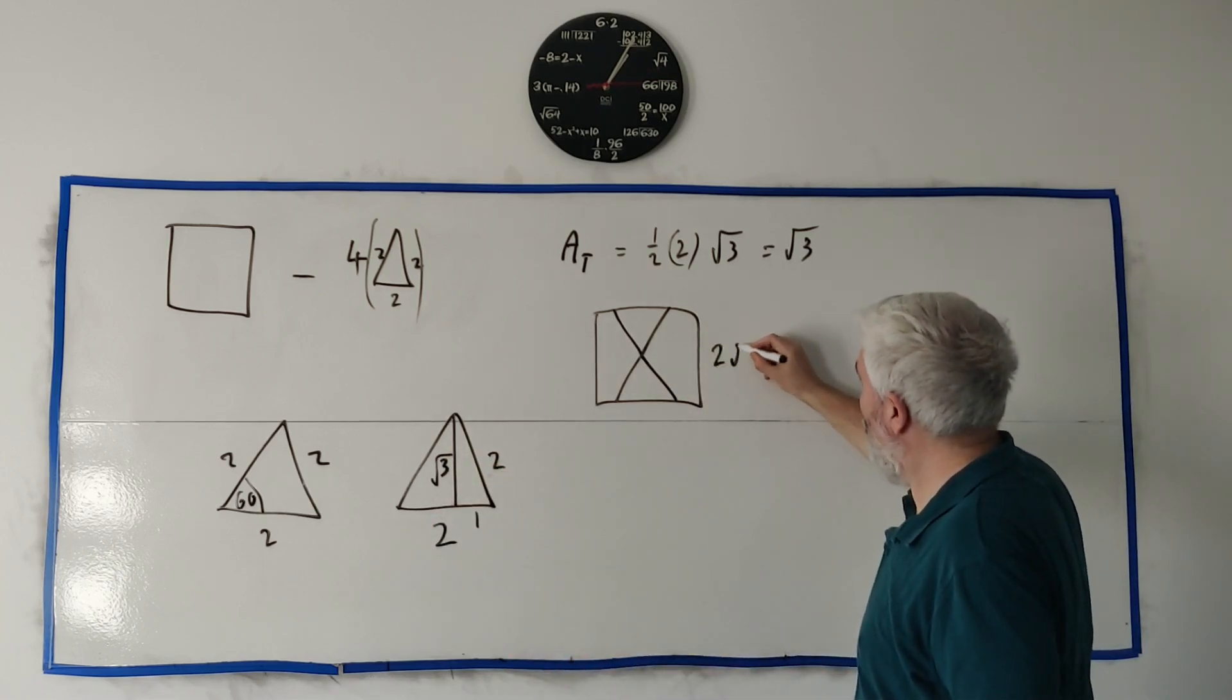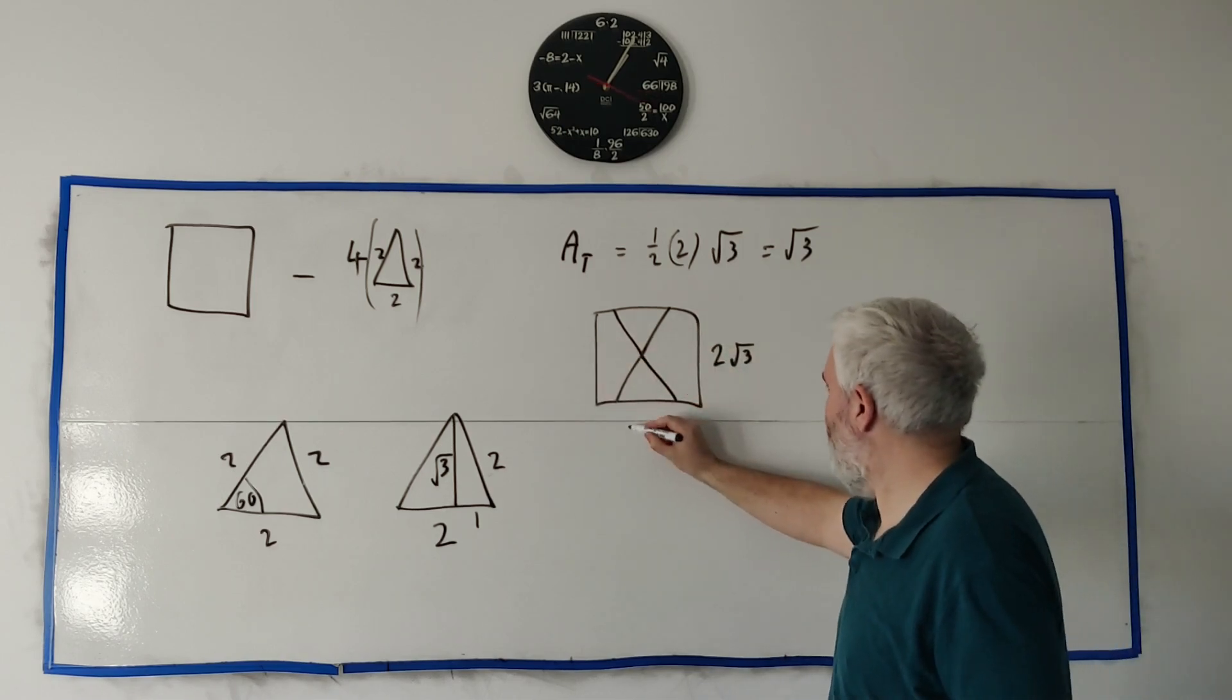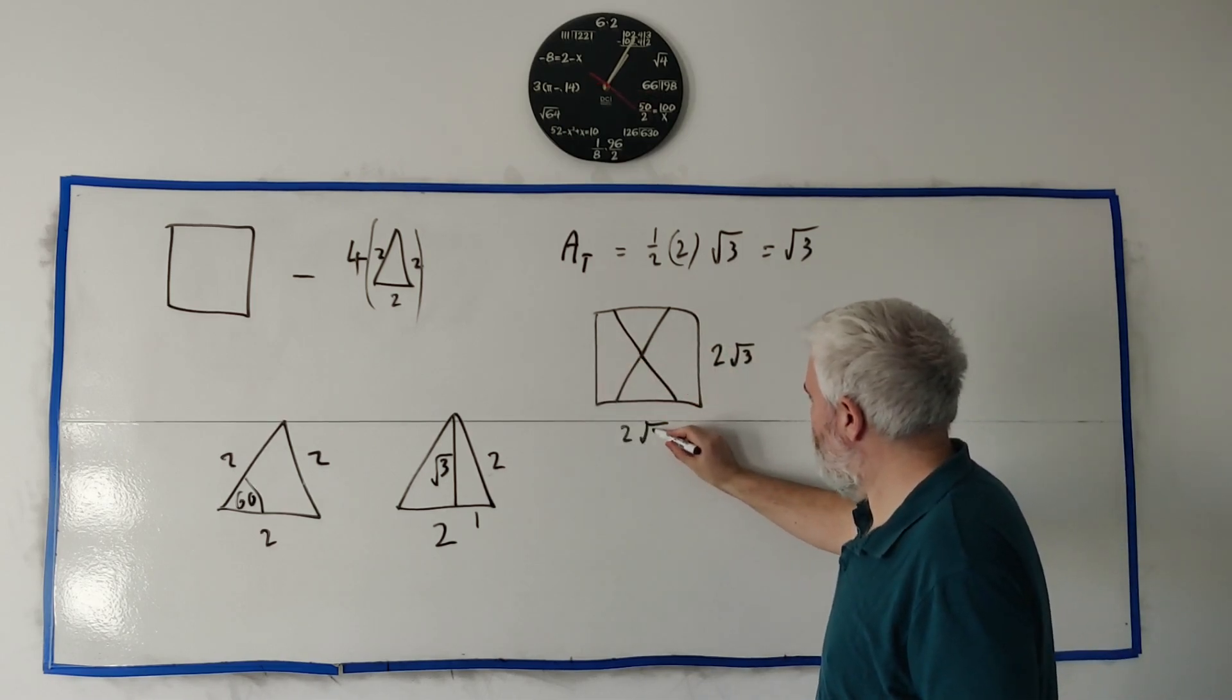So this square is two times square root of three, and the same on this side because we can draw the triangles the other way. Two square root of three.